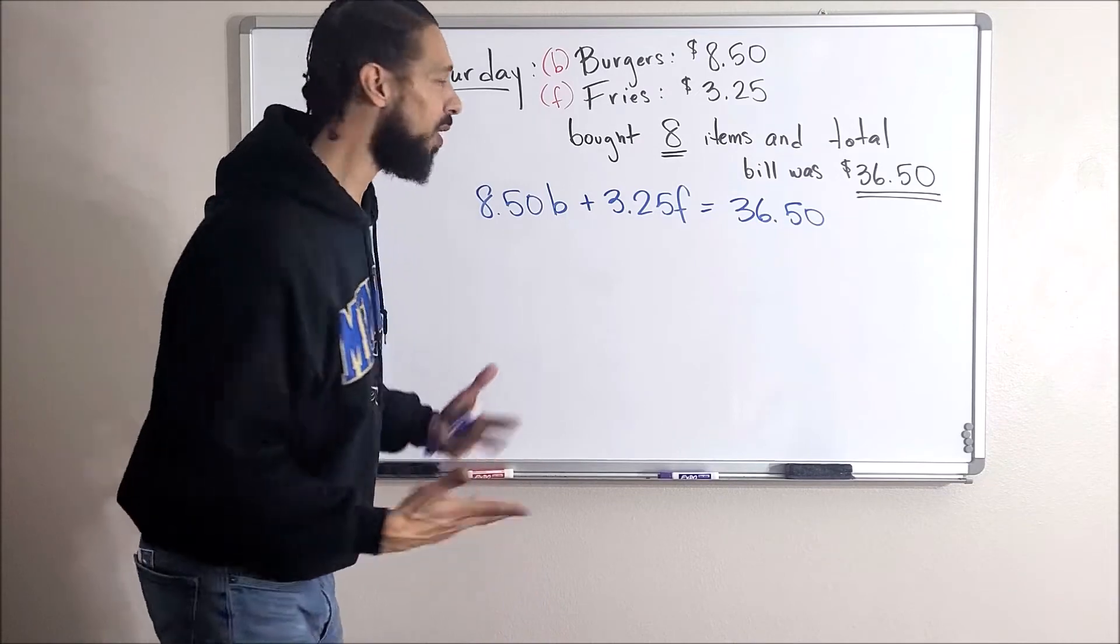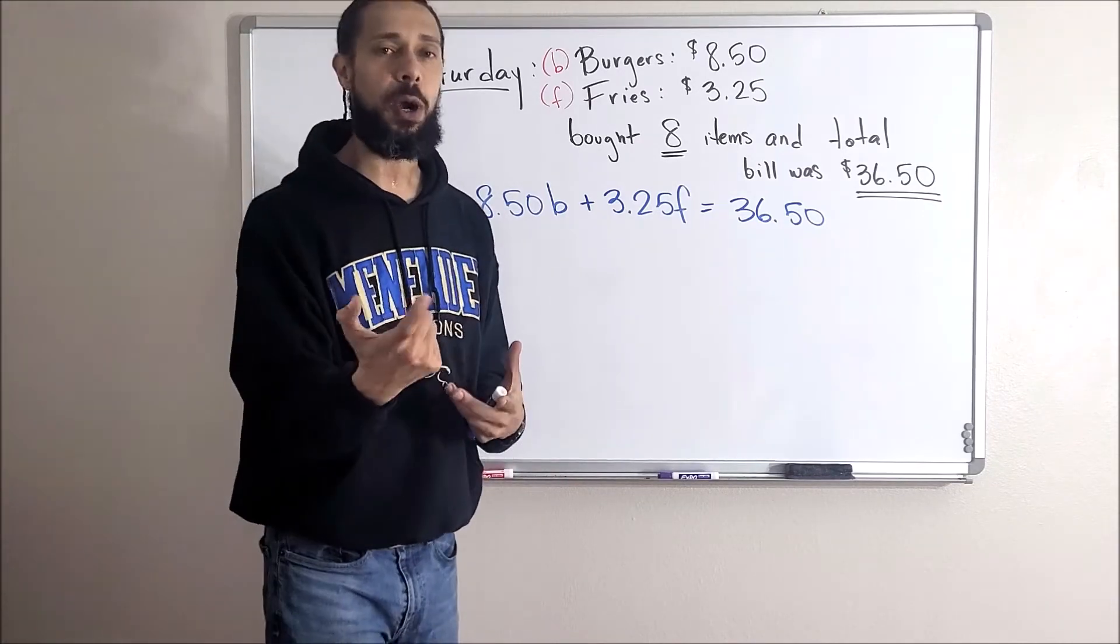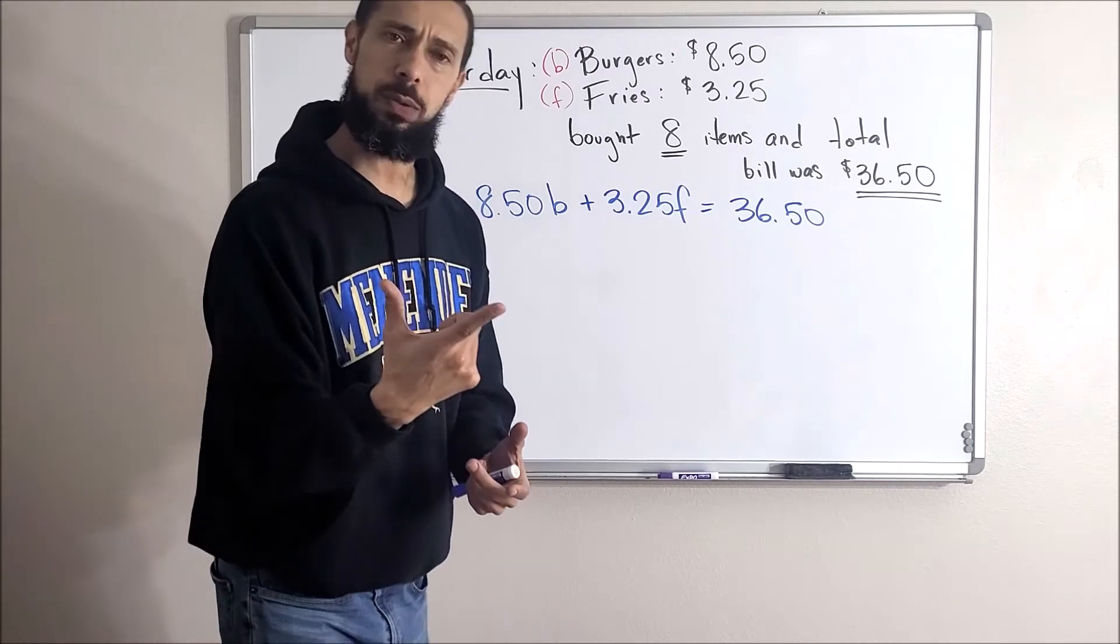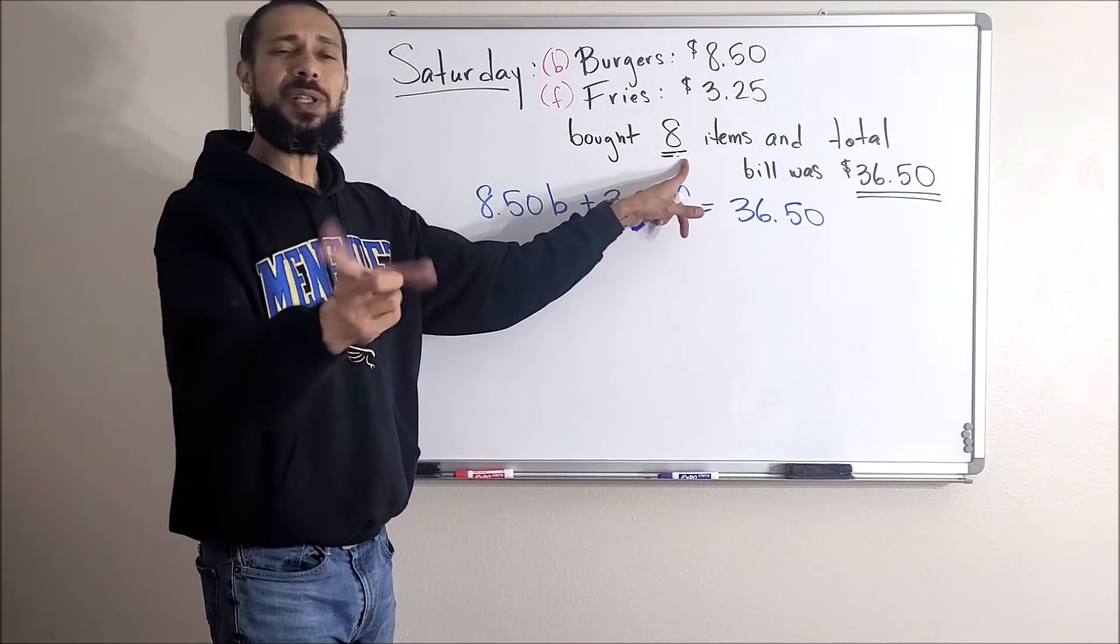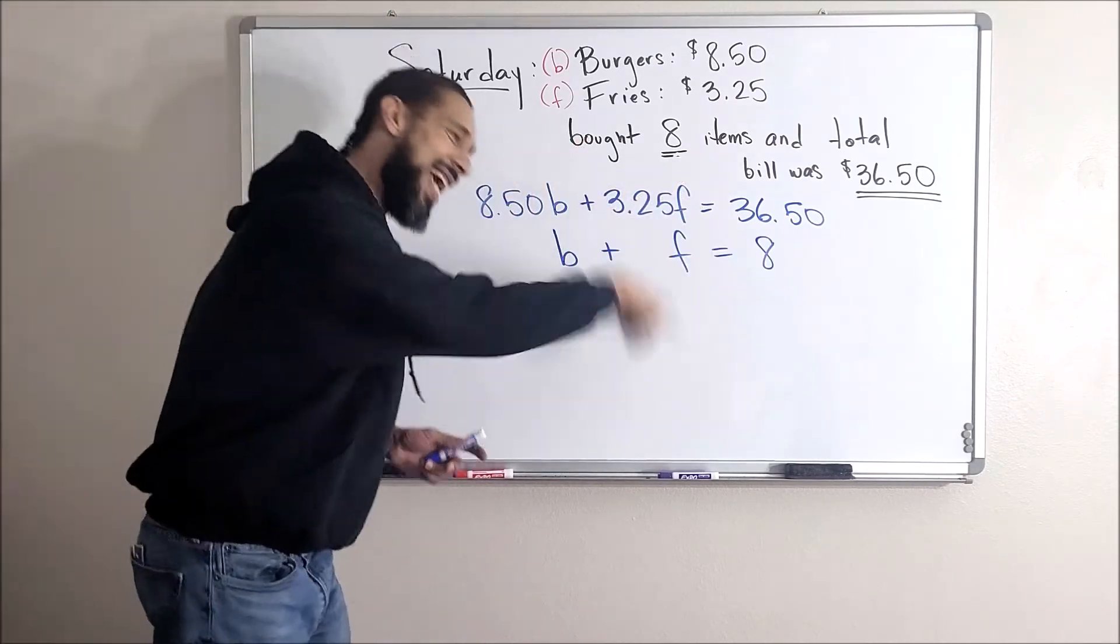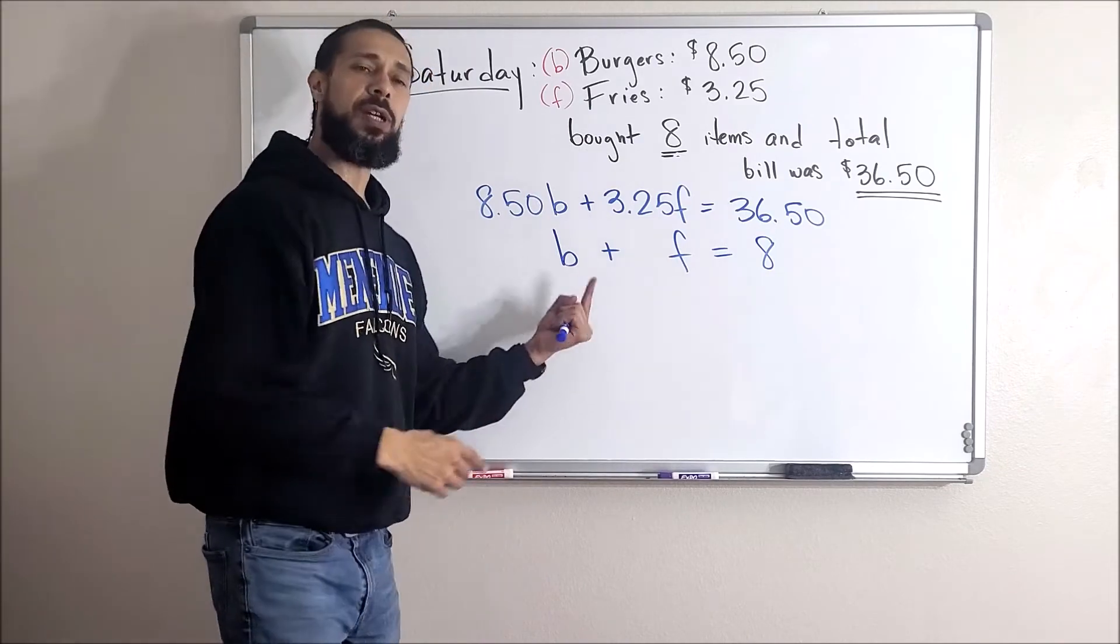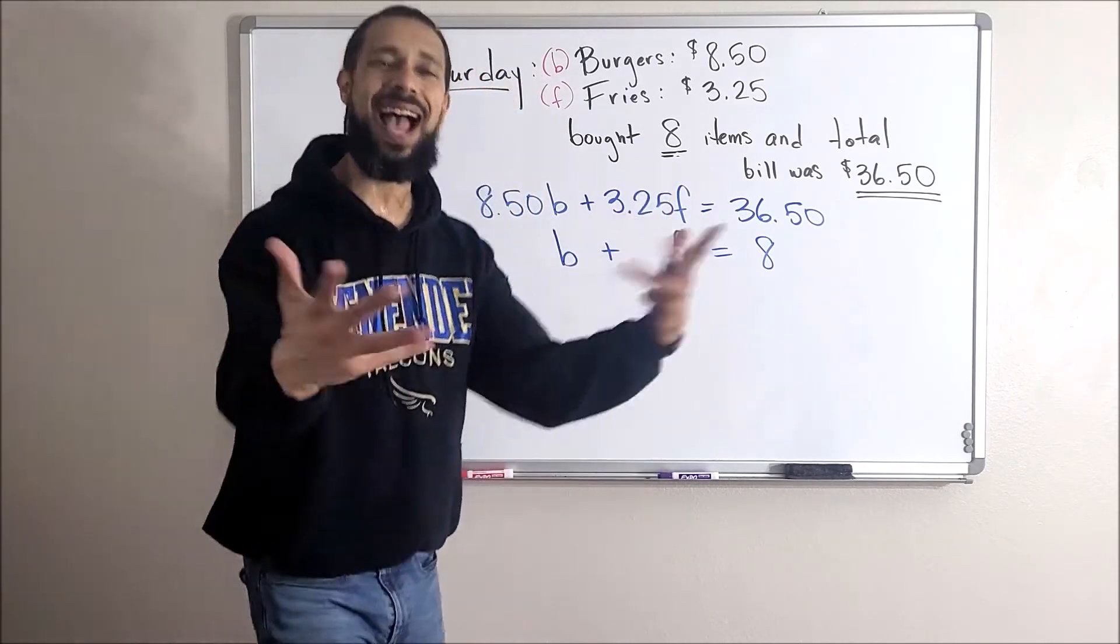But there's another number up here and I underlined that for a reason. I wish there was another equation that we could talk about burgers and fries. Well wait a minute, let's say I bought eight items and I'm only buying burgers and fries. Think about this: don't my burgers and fries have to add up to eight? That's exactly right. That's what this bar eight items means.